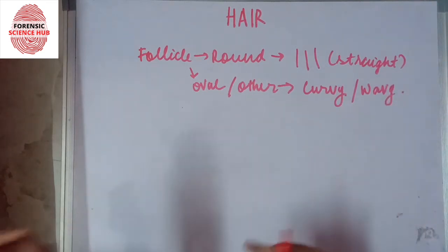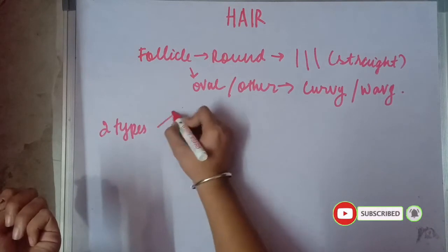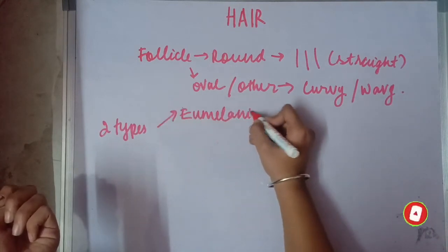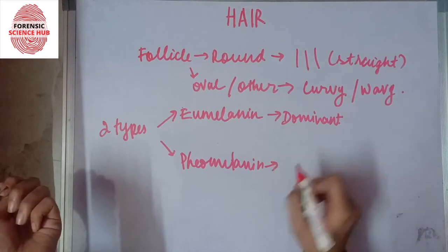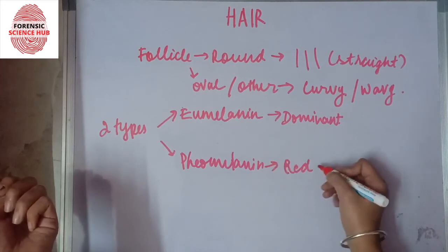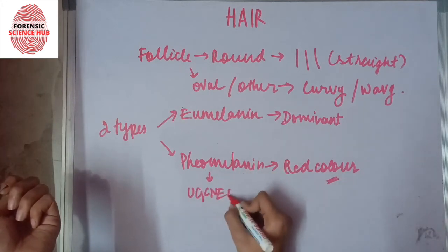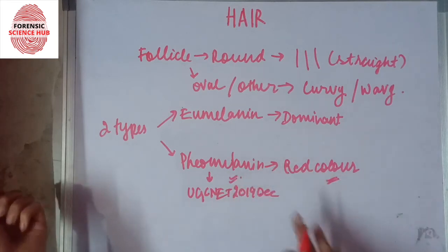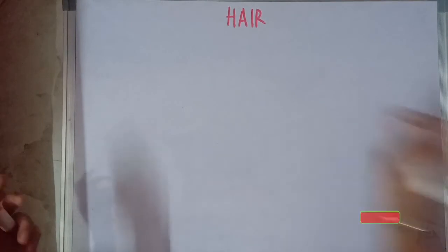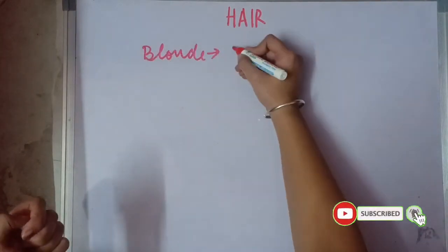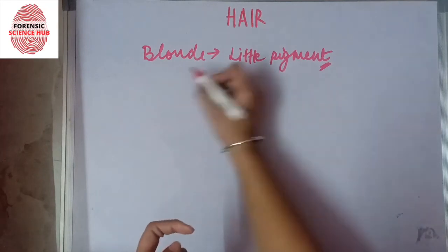Now, the melanin pigment is divided into two types: eumelanin and pheomelanin. Eumelanin is the dominant one, while pheomelanin is found in fewer people and is responsible for giving a red color to the hair. This was actually asked in the UGC NET exam in December 2019. Blonde hair color is found when there is very little melanin — either type — present in the cortex.